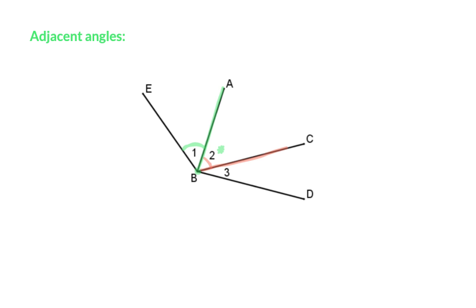Angle B2 is also adjacent to angle B3, but angle B1 and B3 are not adjacent because there's no common arm. Just a reminder that angles can be named in different ways in geometry. Here we cannot simply talk about angle B because there are three different angles at vertex B. So we can choose to say angle B1 or angle EBA when we want to talk about the angle on the left.